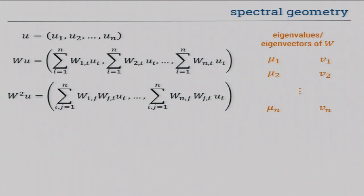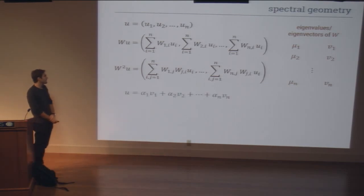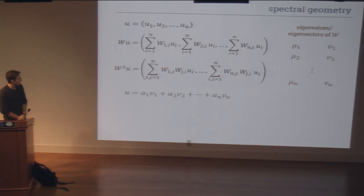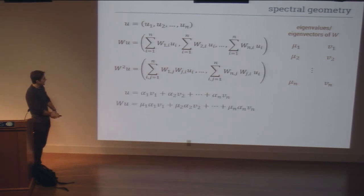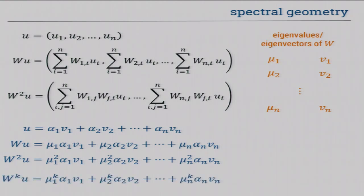Since W is real and symmetric, it has eigenvalues μ₁ through μ_n and eigenvectors v₁ through v_n. With some upfront work, we write the initial configuration u in the eigenbasis as a linear combination of eigenvectors. Now applying W just multiplies each component by the corresponding eigenvalue. Applying W again multiplies by the eigenvalues again. For the k-th power, we just multiply each component by the k-th power of the corresponding eigenvalue — making it very easy to compute.